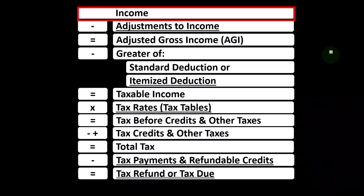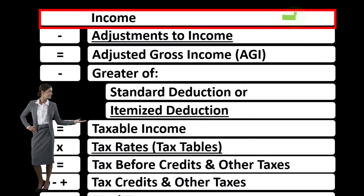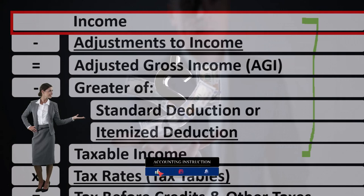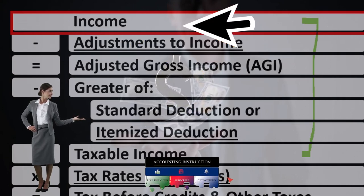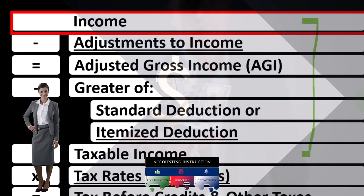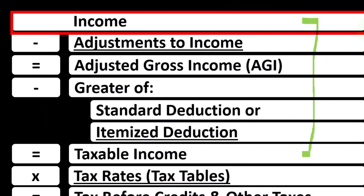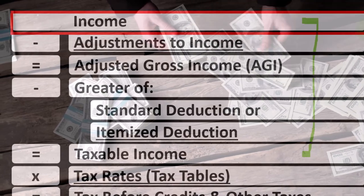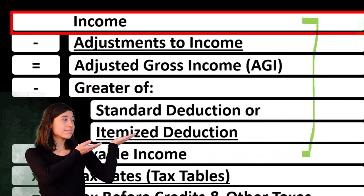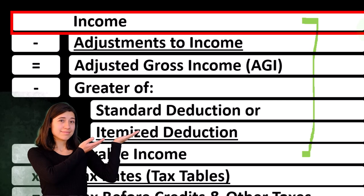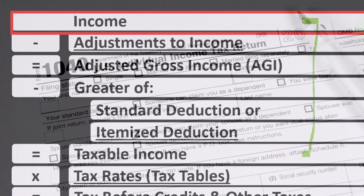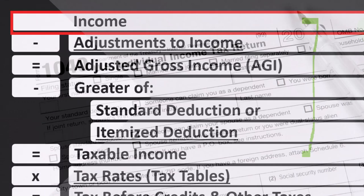When looking at the income tax formula, we're focused on line one — income — remembering that the first half of the income tax formula is essentially an income statement. It's a strange income statement where we have income up top and expenses in the form of deductions to arrive at taxable income rather than net income. The general rule from the IRS is that everything is basically income unless the IRS code specifically says it is exempt.